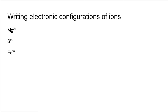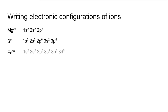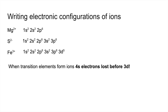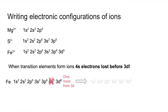Looking at the configuration of ions — ions have either lost or gained electrons. The magnesium atom has lost 2 electrons, sulfur has gained 2, and iron has lost 3. Mg2+ is 1s2 2s2 2p6. S2- has the configuration shown. For Fe3+, the rule with transition metal ions is: remember 4s fills before 3d, but we also lose electrons from 4s before 3d. Iron's atom configuration is argon 4s2 3d6. Losing 3 electrons means removing the two 4s electrons first, then one 3d electron, giving argon 3d5.